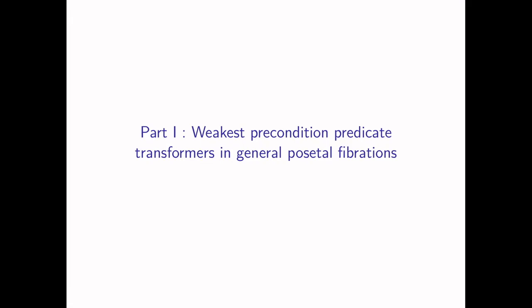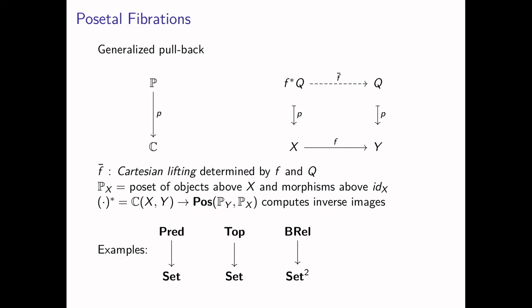We begin by studying weakest preconditions in a general setting using fibrations. A fibration is a situation in which we can take the inverse image of an object in P along a morphism in C. For every object in C we can define its fiber, denoted P sub x, which is a poset of objects mapped to x by morphisms mapped to the identity of x. If you have a morphism in C going from x to y, you can compute a functor from the fiber over y to the fiber over x, and this functor computes inverse images. If we have f going from x to y, and q above y, then we compute the inverse image f-star-q, with the morphism in P denoted bar-f — the Cartesian lifting determined by f and q.